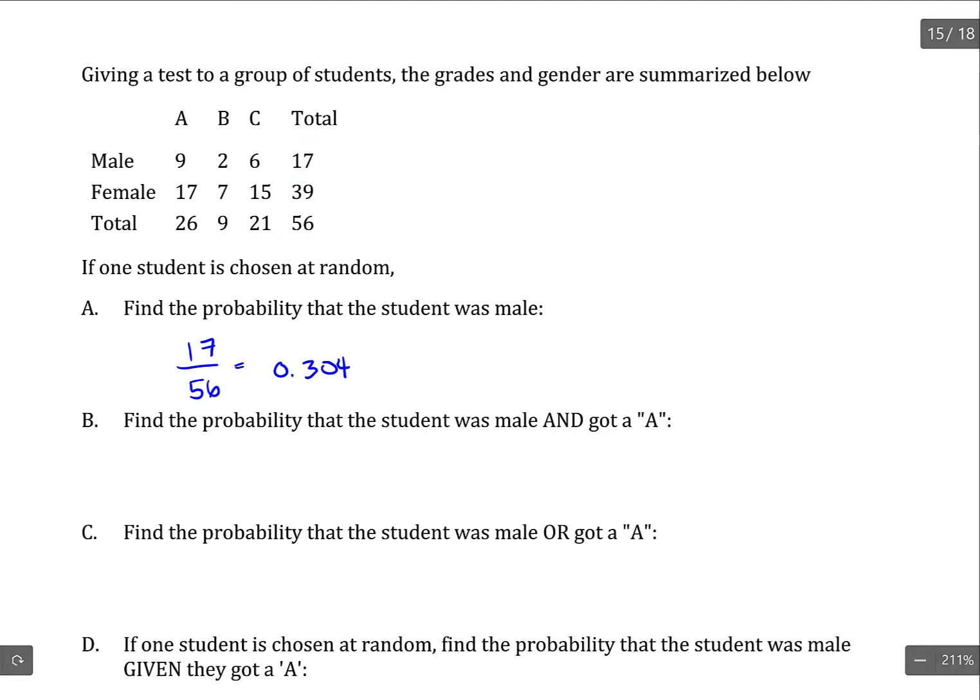Find the probability that a student was male and got an A. So male and got an A, there's 9 of those out of 56. So when you have an and probability with a contingency table, you're looking at the intersection of two groups.